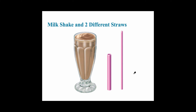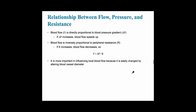The basic relationship between diameter and resistance is that as the diameter decreases, the resistance increases. The relationship between flow, pressure, and resistance can be described using this formula. Blood flow is directly proportional to blood pressure — when pressure increases, blood flow also speeds up. However, blood flow is inversely related to peripheral resistance, so resistance is the denominator and blood pressure gradient is the numerator. If resistance increases — if the blood vessel gets smaller, a smaller radius — the blood flow will decrease.